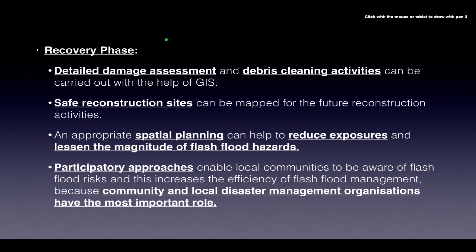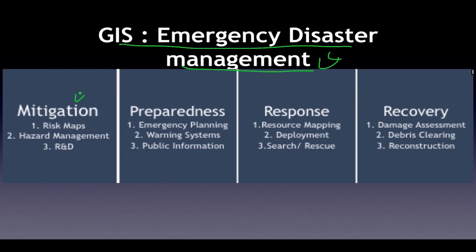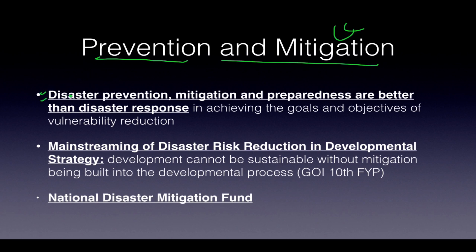It's useful to make a summary table of GIS roles. The four phases and their functions are: Mitigation — risk mapping, hazard management, R&D; Preparedness — emergency planning, warning systems, public information; Response — resource mapping, deployment, search and rescue; Recovery — damage assessment, debris cleaning, and reconstruction. This condenses the information into 12 key points.